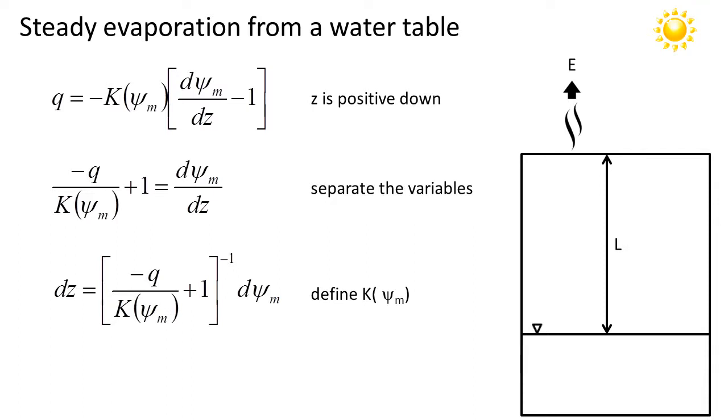We separate the variables now we have dz on the left-hand side and we have dψ_m on the right-hand side, and before we can proceed further we'll have to define the unsaturated hydraulic conductivity function.